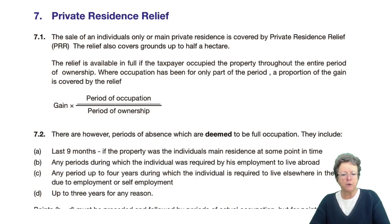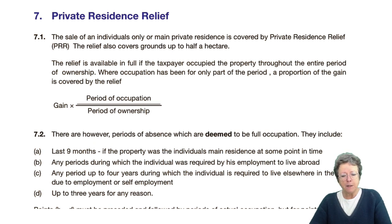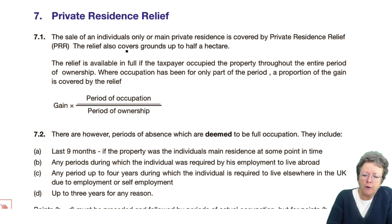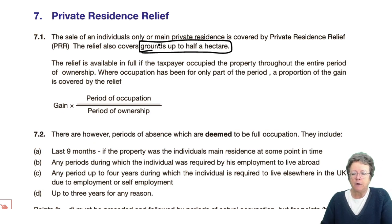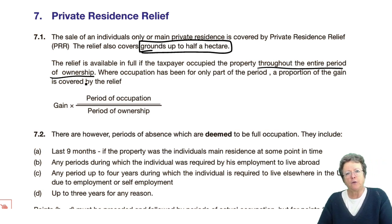Finally in this chapter, we've got private residence relief. If you have a domestic residence in the UK and you live in it the whole time, then you will get full relief — you will pay no capital gains tax when you sell it. This also covers the grounds of up to half a hectare of land. If you live there throughout the entire period of ownership, you will pay no tax on the sale of your residence.